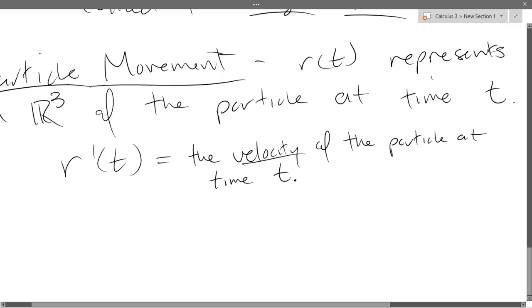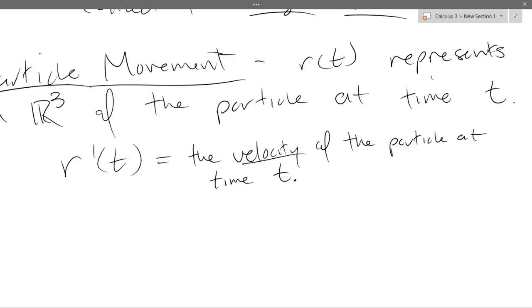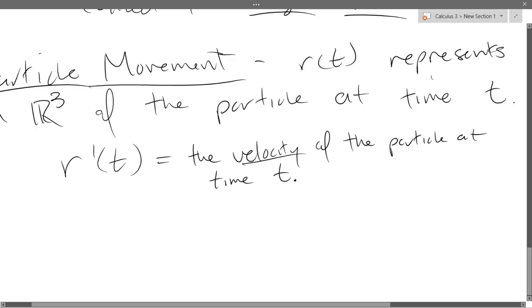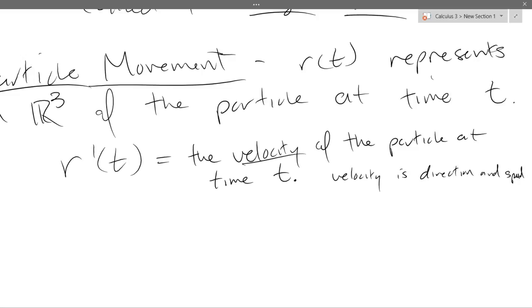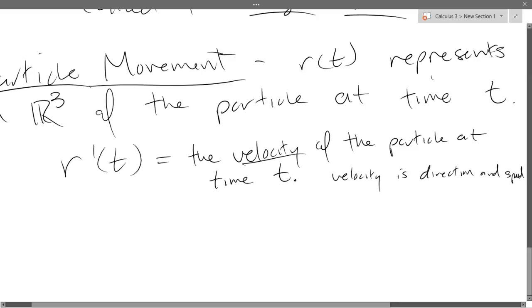So R prime of T equals the velocity of the particle at time T. And we say velocity. That will give us a direction, and not just a direction, but you can see how long the vector is. The magnitude is the speed. So it will give you direction and speed all in one. If somebody asks for direction, they probably want the unit vector version of velocity.